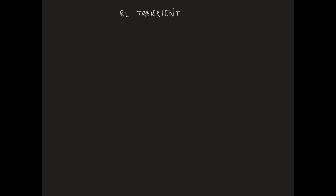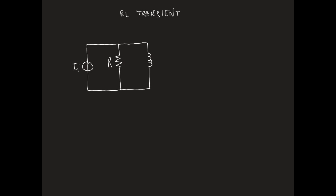Let us consider a circuit consisting of a current signal source Ii, a resistor with resistance R, and an inductor in parallel to the resistor with inductance L.